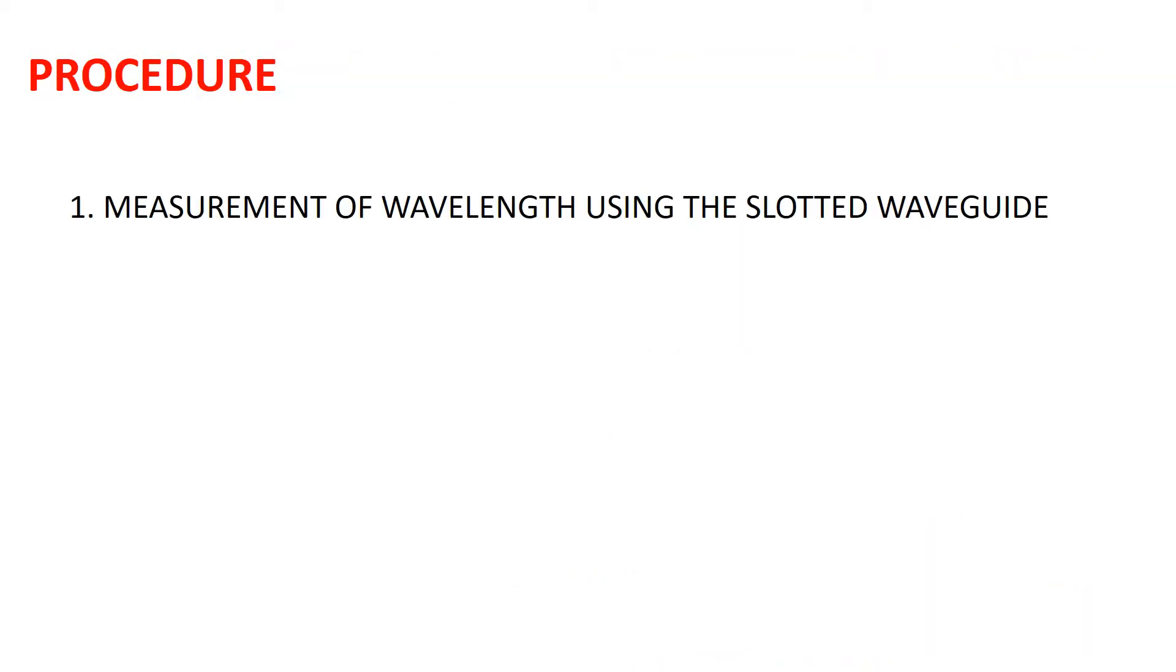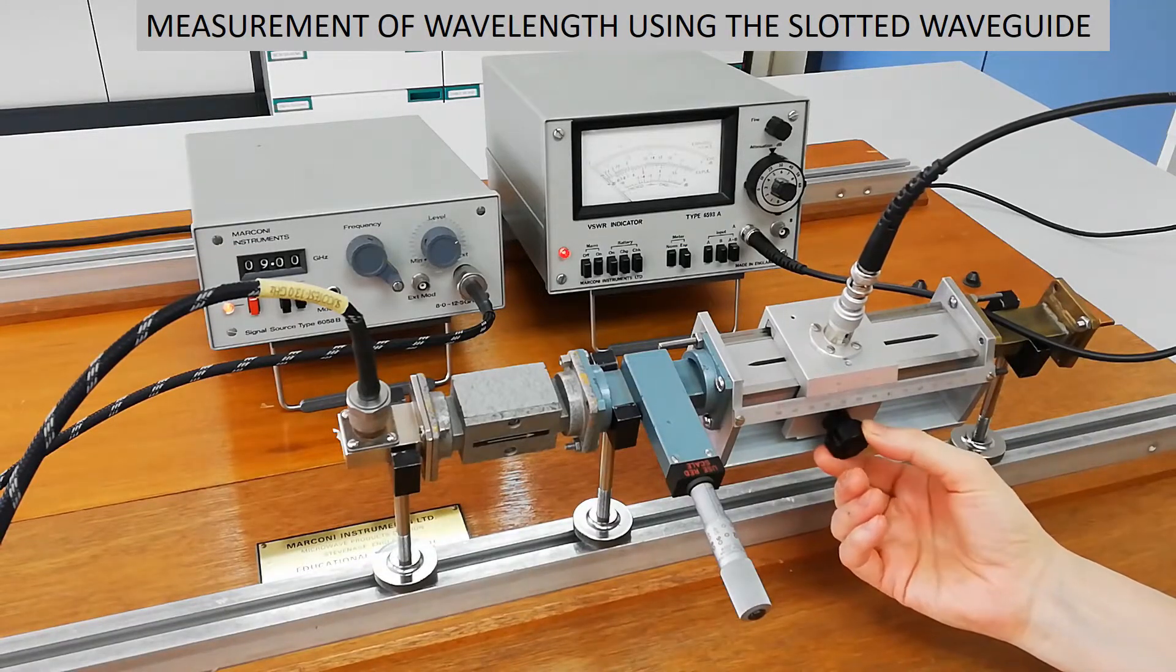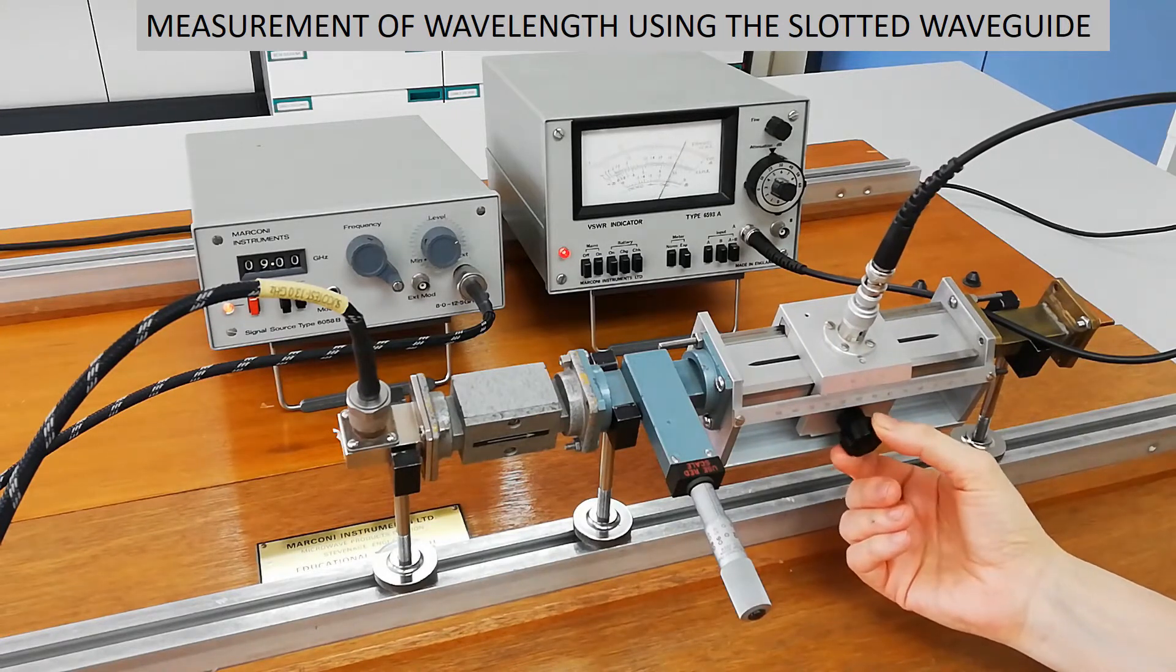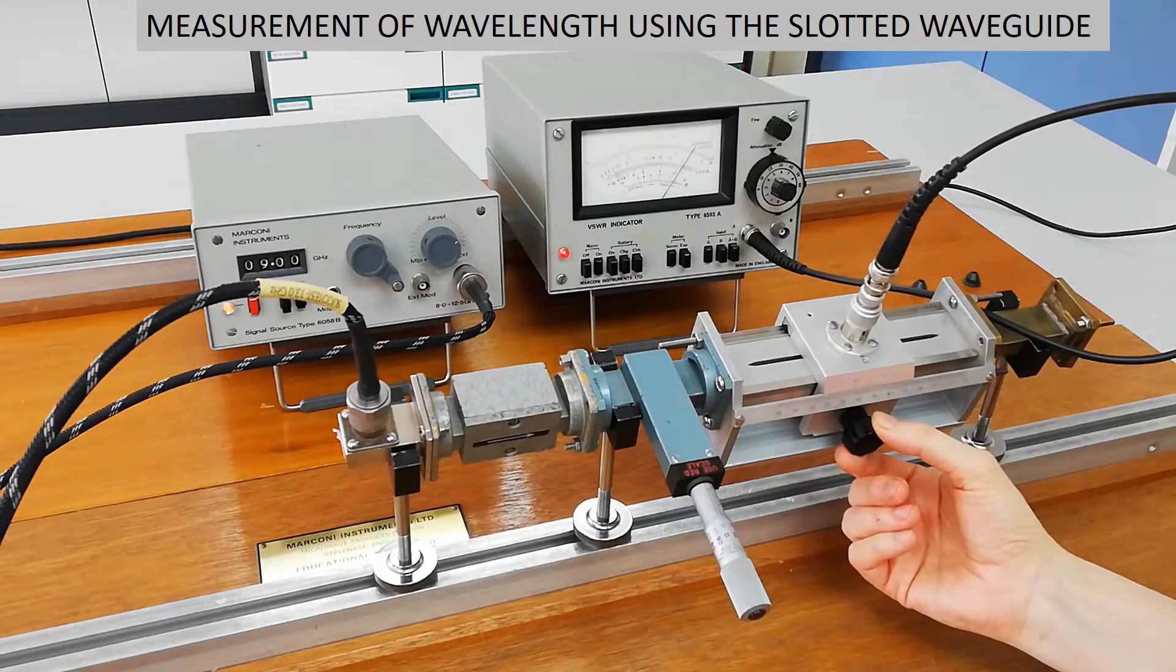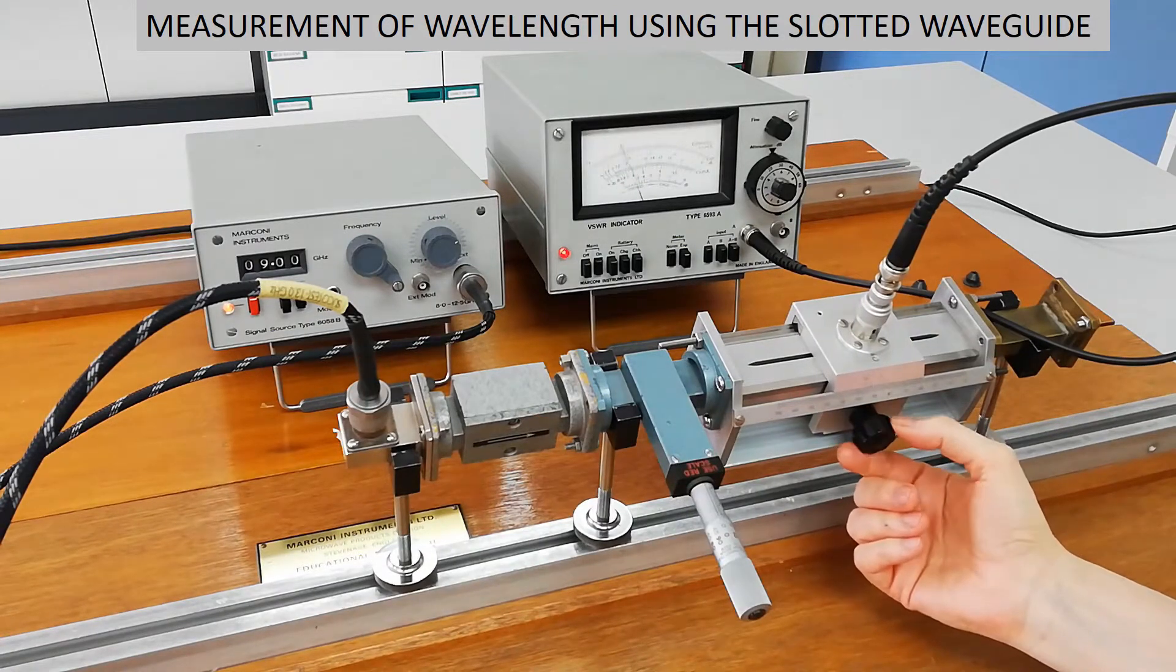In this presentation we show two different methods to determine the guide wavelength. The first of them uses the slotted waveguide. We have the probe located at a minimum position. We note the reading of this probe position on the scale.